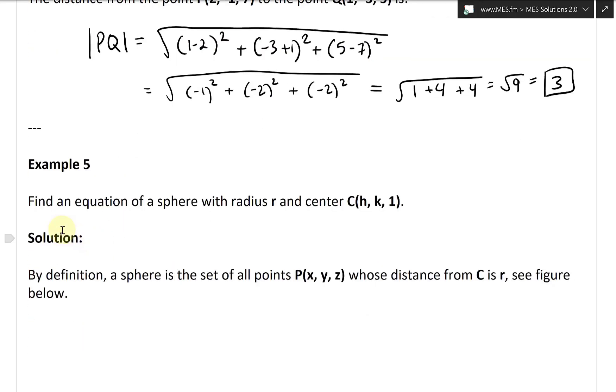Alright, so now let's take a look at example 5, and this one states, find an equation of a sphere with radius R and center H, K, 1—actually not 1, it's actually L.